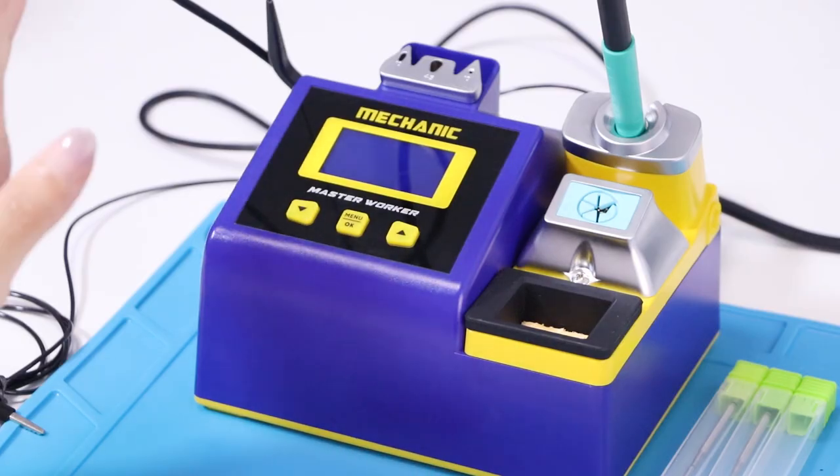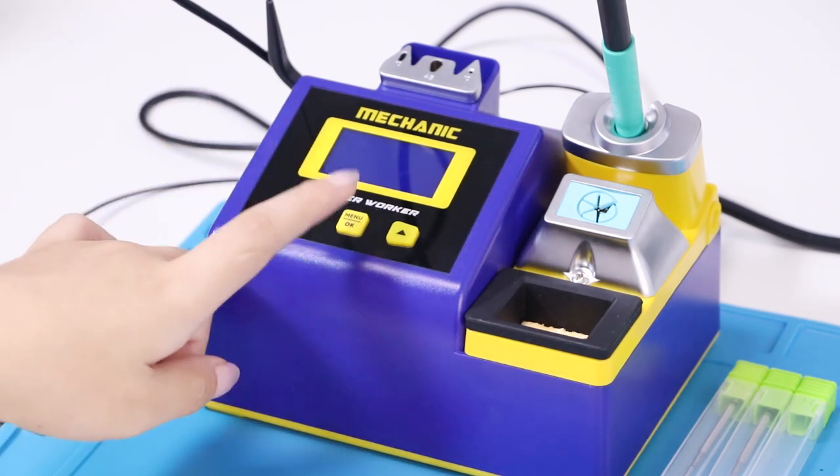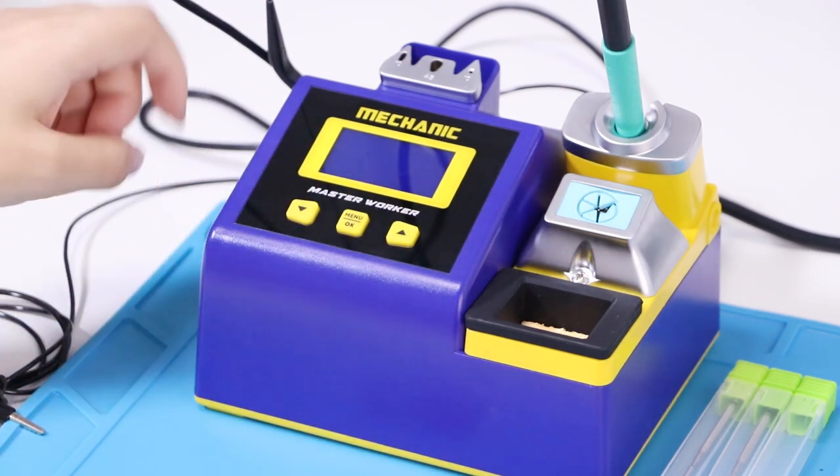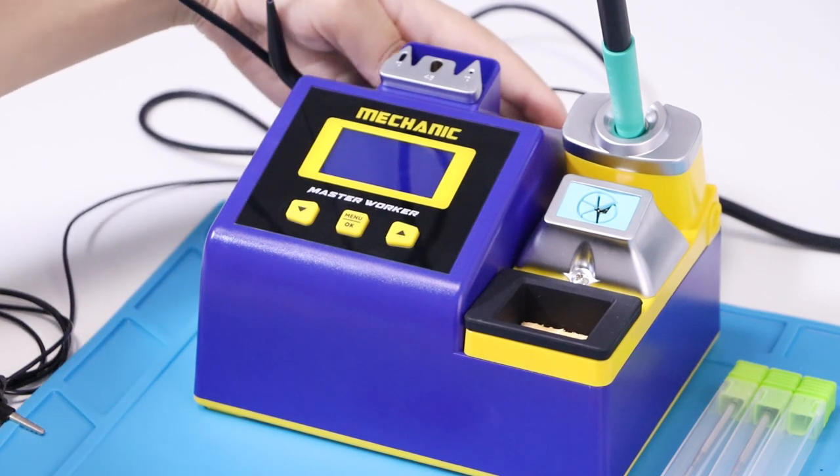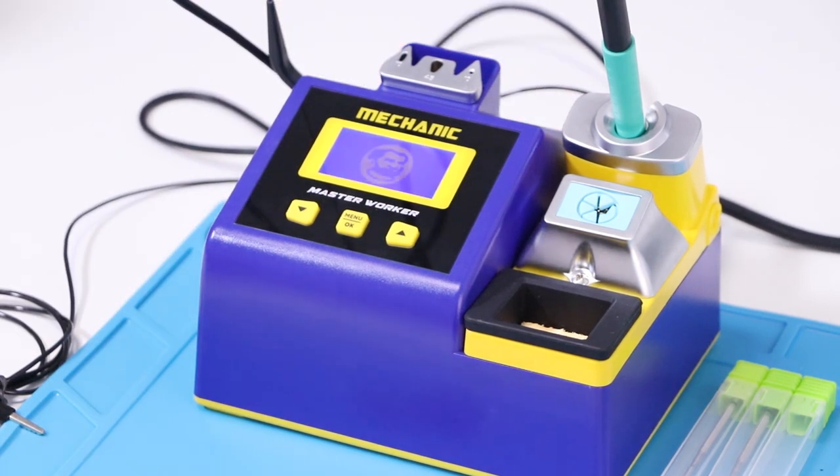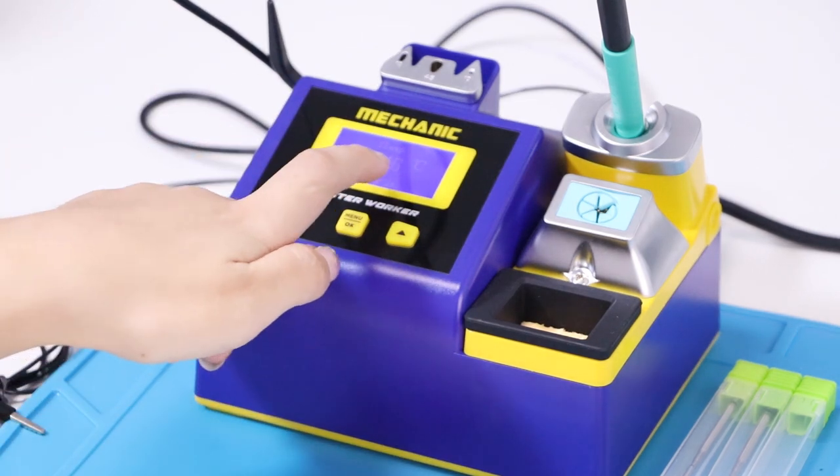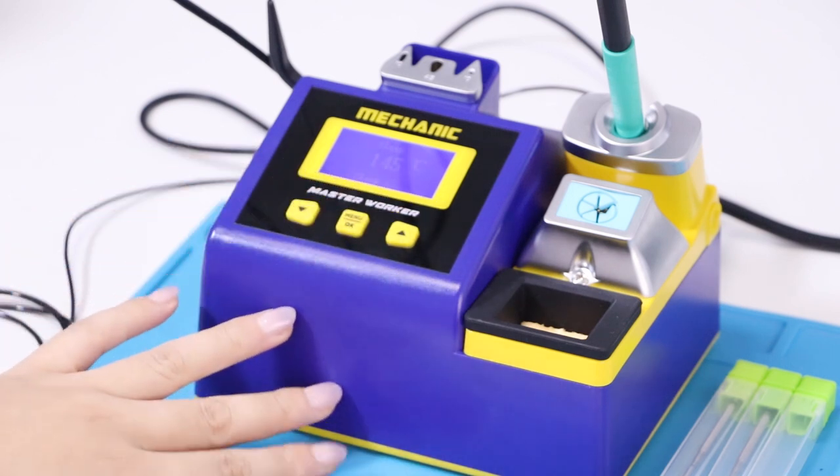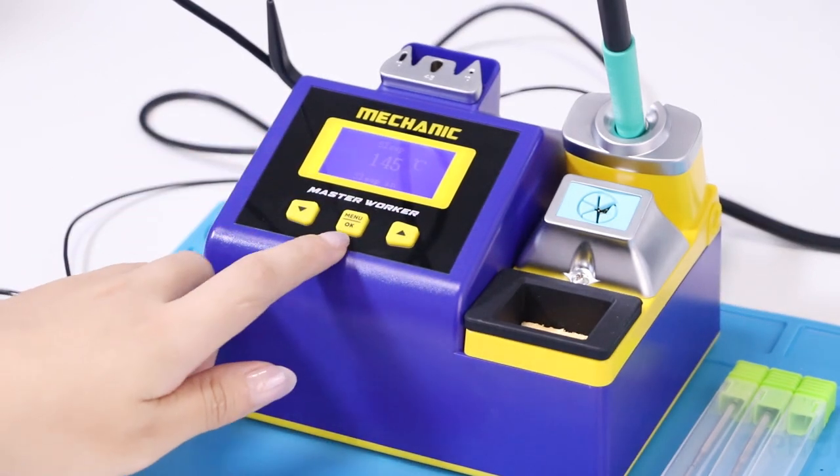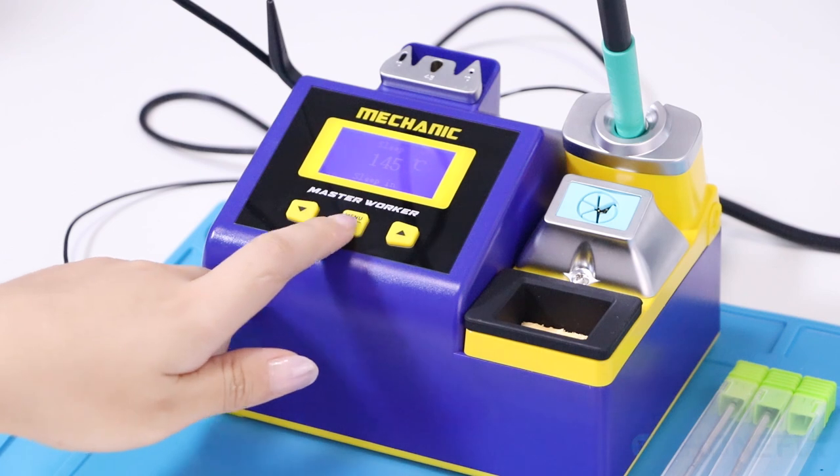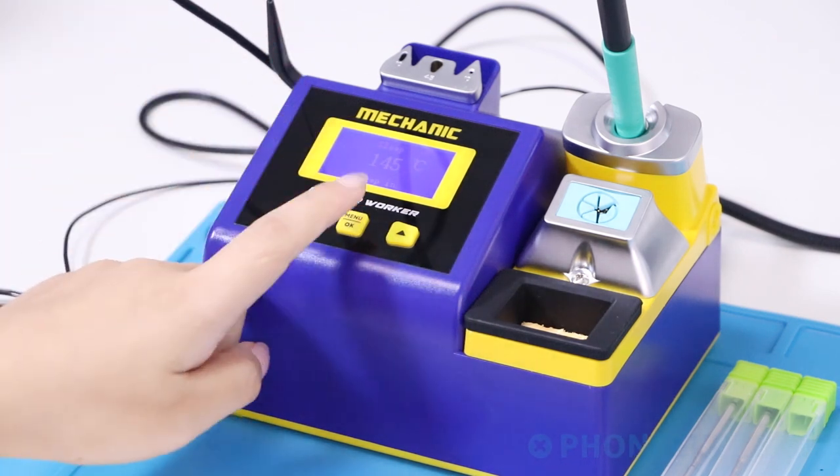Now let's connect the power and show you the system and how to use it. The screen has showed its sleep temperature 145 degrees. In the middle button, it has shown its system setting.